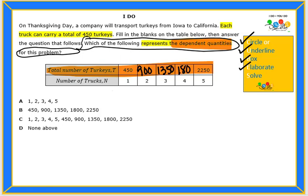That means that each truck is the independent variable. The turkeys depends on the number of trucks. The turkeys depends on the number of trucks.